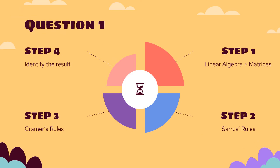Moving on to the methodology, there are four steps in question one that we need to apply to identify the result. The first one is applying linear algebra. The second one, we apply Sarrus' rule. The third one, we apply Cramer's rule. And the last one, we identify the result.